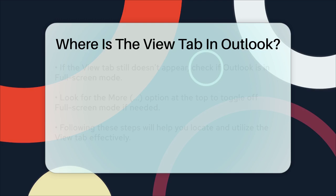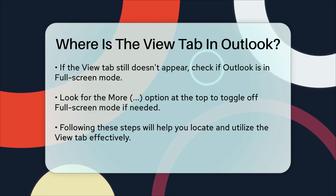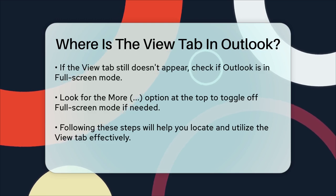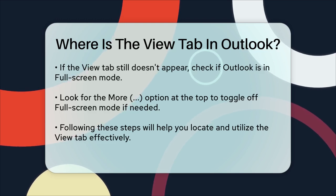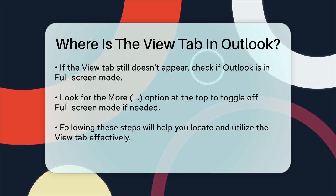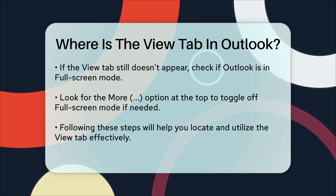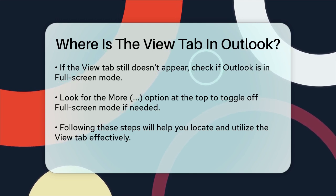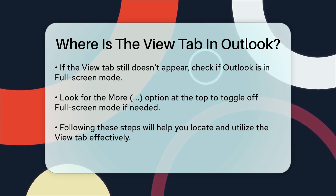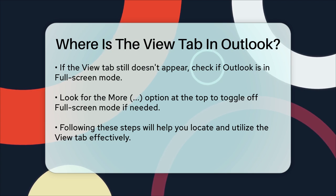If you're still having trouble finding the View tab, or if it's not showing up after following these steps, it might be worth checking if your Outlook is in Full Screen mode. Sometimes this mode can hide the ribbon tabs. To check, look for the More option at the top and see if you can toggle off Full Screen mode.